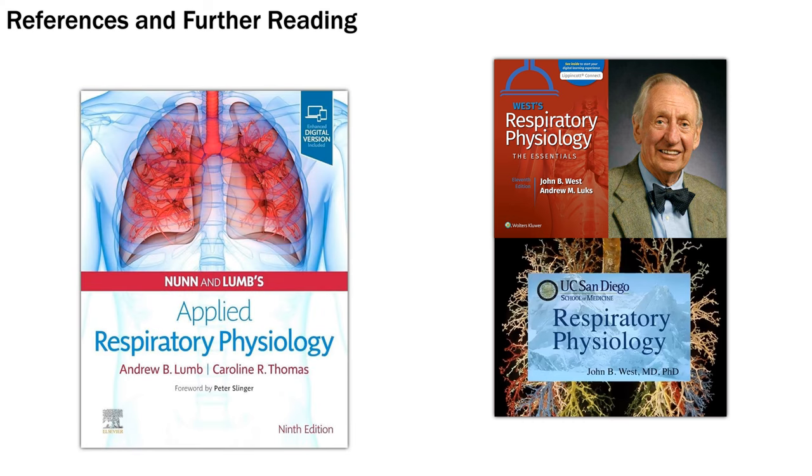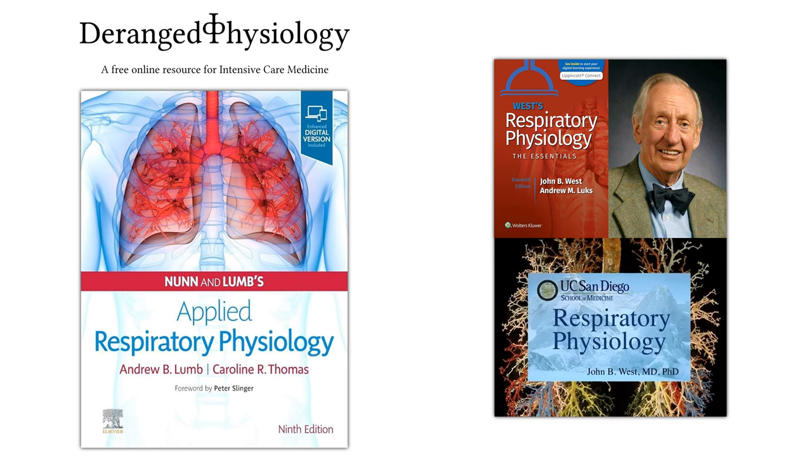If you want even more depth than West's book, I recommend Nunn and Lumb's Applied Respiratory Physiology. Some concepts such as the three unit model are discussed there in more detail. As usual, check out Deranged Physiology as well.